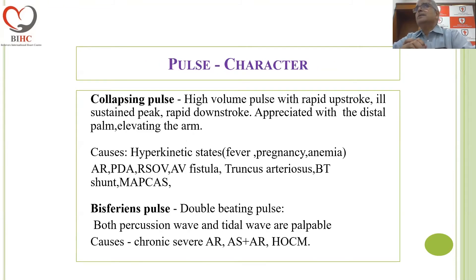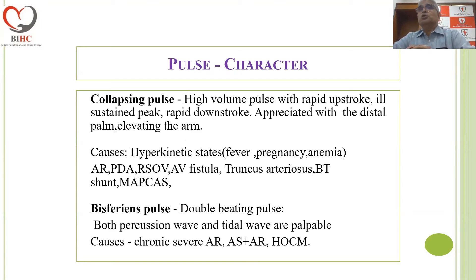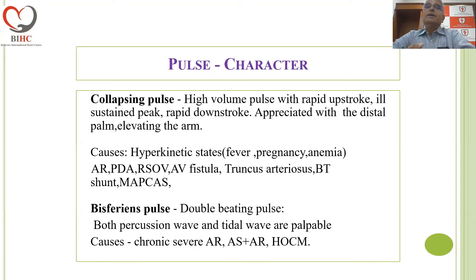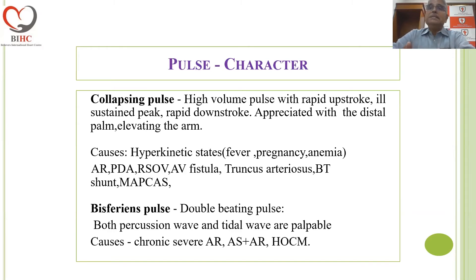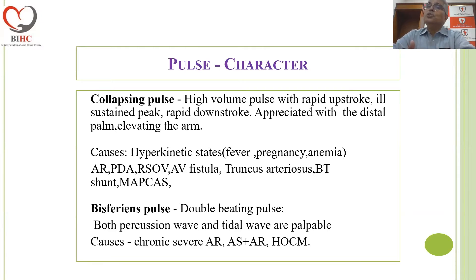The character of the pulse — the different attributes together — give a defined character to the pulse, like a collapsing pulse in aortic regurgitation, where there is a high volume pulse with a rapid upstroke, ill-sustained peak, and a rapid downstroke. It is appreciated with the distal part of the palm, elevating the arm. Aortic regurgitation or a PDA is the typical reason for a collapsing pulse. A bisferiens pulse is a double-beating pulse where both the percussion wave and the tidal wave are palpable. The causes include chronic severe aortic regurgitation, aortic stenosis with aortic regurgitation, or hypertrophic obstructive cardiomyopathy.